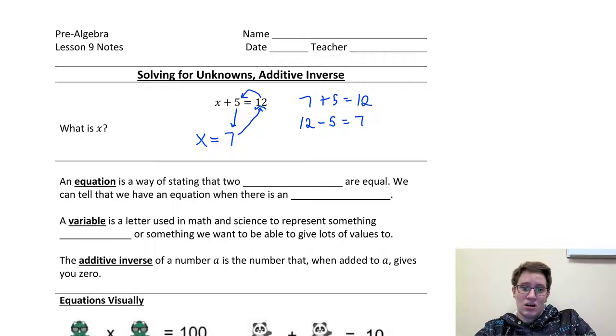An equation is a way of stating that two expressions are equal. If what we have is just a 2x and there's no equal sign, that's an expression. Or if we just have the number 5, we actually can call that an expression as well. But when we put an equal sign in between it, that turns it into an equation. We can tell that we have an equation when there is an equal sign. If you're looking at a problem and it doesn't have an equal sign, it does not make sense for you to try to find x because we don't have enough information.